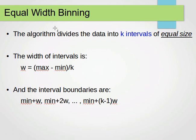Equal width binning divides the data into k intervals of equal size. The width of each interval is w = (maximum value − minimum value) / k. We choose k — for example, five or ten intervals — and all of them have the same size.